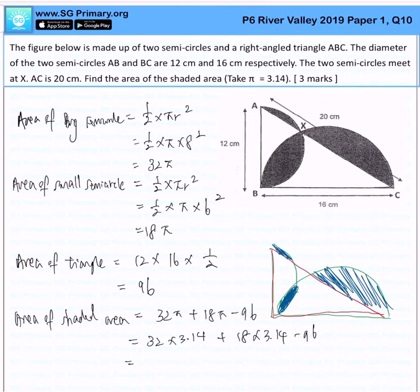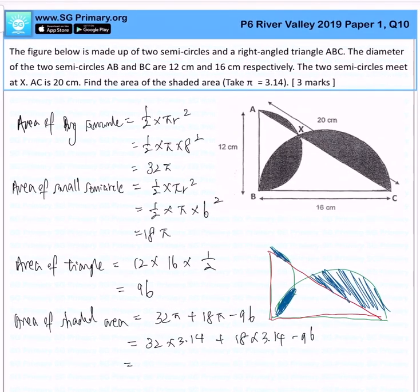Let's key into the calculator, and if we were to calculate right, our final answer that we will derive here would be 32 times 3.14 plus 18 times 3.14 minus 96. We will get a perfect number of 61 cm squared. That is our final answer.